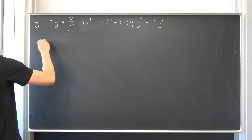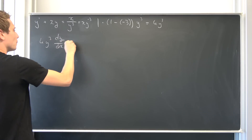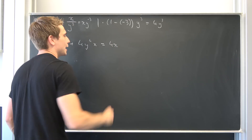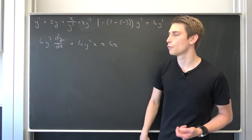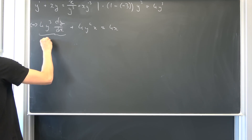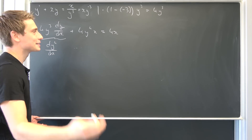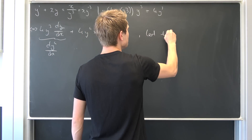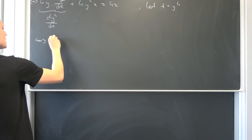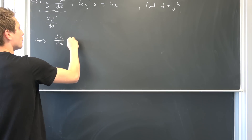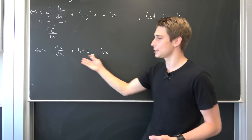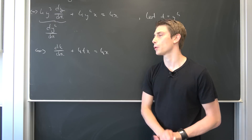So on the one hand we have 4 times y to the third power dy/dx, plus 4 times y to the fourth power times x being equal to — this cancels out — and we have 4 times x. Our theorem for the Bernoulli differential equation states that this first term right here is nothing but d(y to the fourth power)/dx. We can let t equal y to the fourth power and rewrite this whole thing as dt/dx plus 4 times t times x equals 4 times x. This is now just a non-homogeneous ordinary linear differential equation.